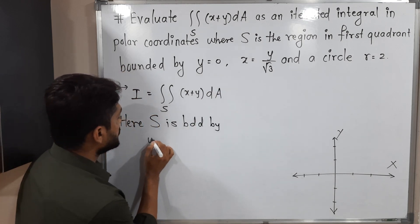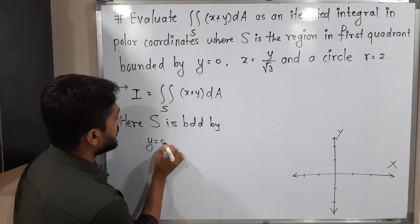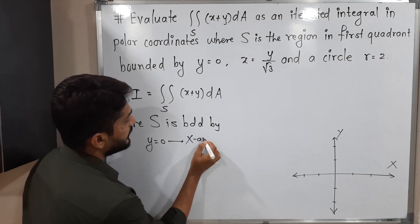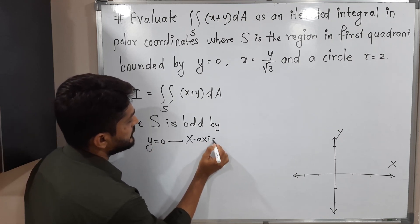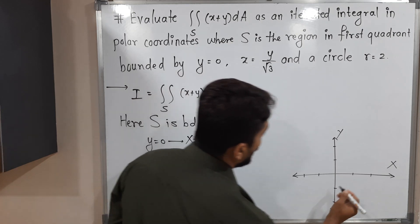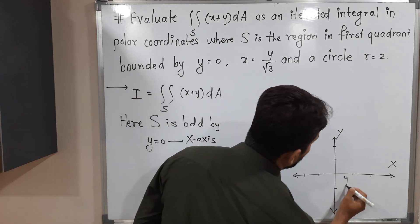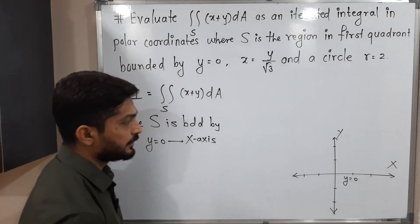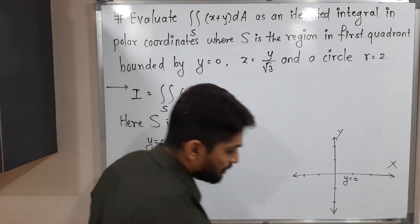The first curve is y is equal to 0. This is the equation of the x-axis. So let me show here y is equal to 0. This is the first curve we have.